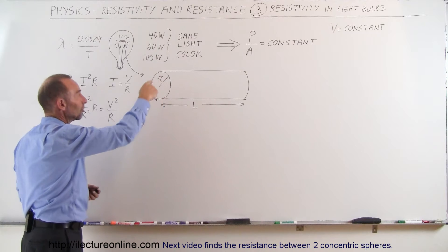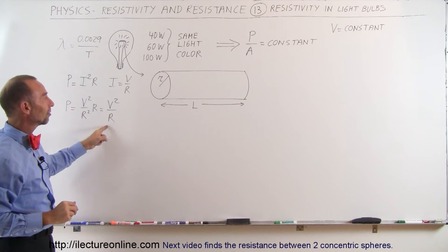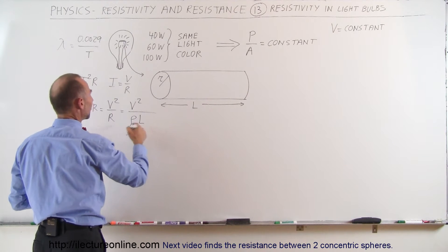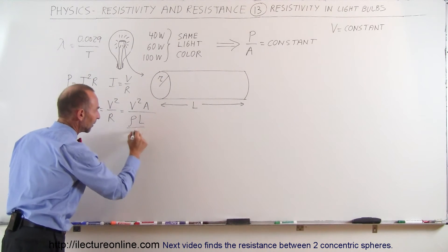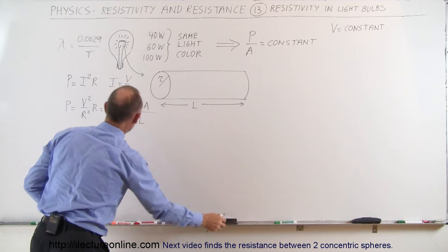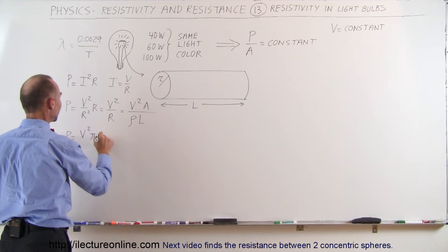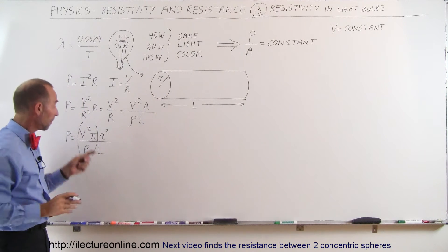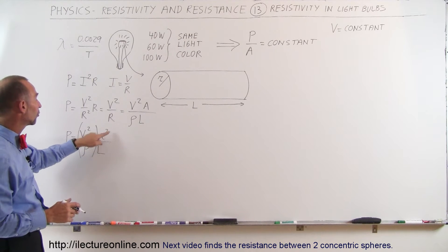Now, since this is a cylinder, the resistance of that cylindrical conductor is equal to resistivity times the length divided by the cross-sectional area. So the power becomes V² divided by (resistivity × L / A), which means we multiply by the area, giving P = V² × A / (ρ × L). Substituting the cross-sectional area A = πR², we get power equal to V² × πR² divided by ρ × L. Since V², π, and ρ are all constants, we see that the power is proportional to R² / L.